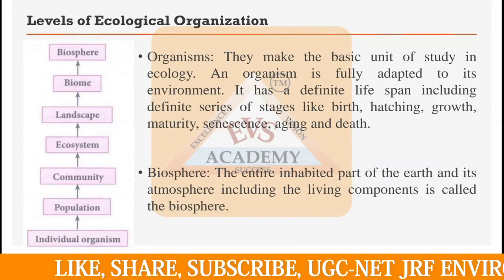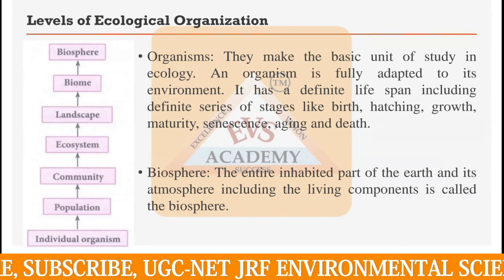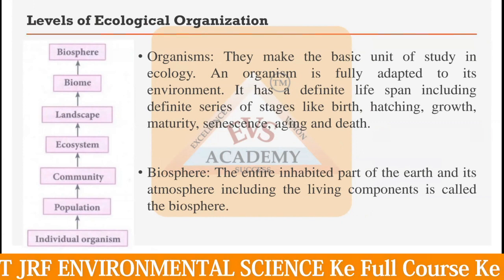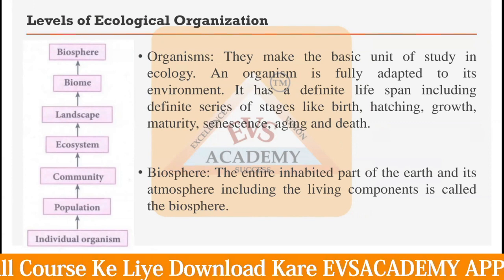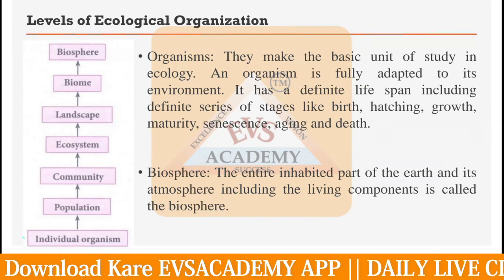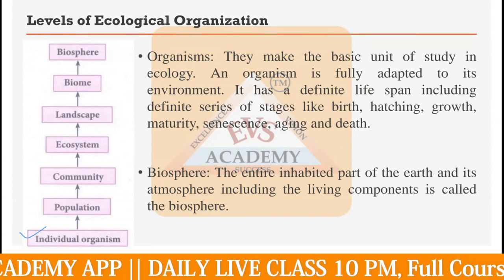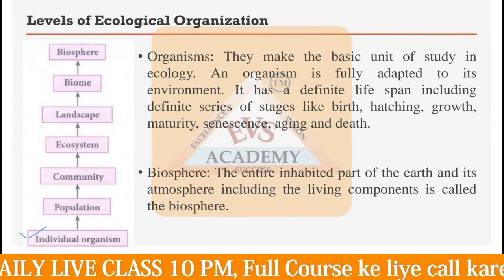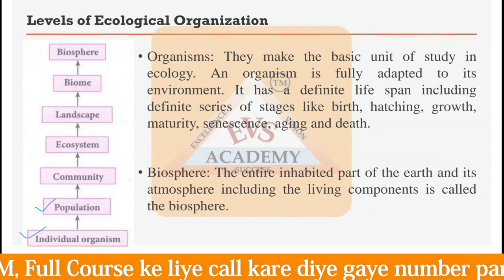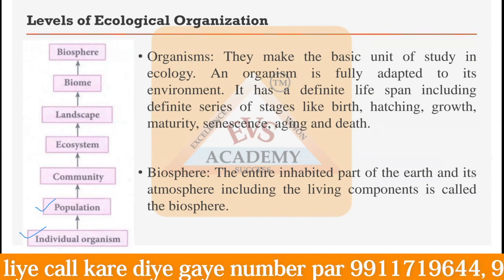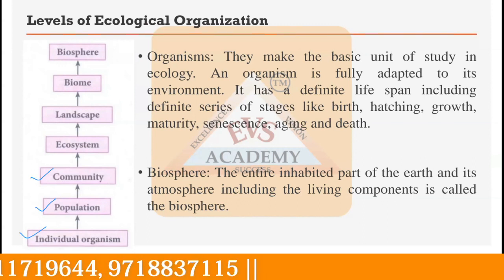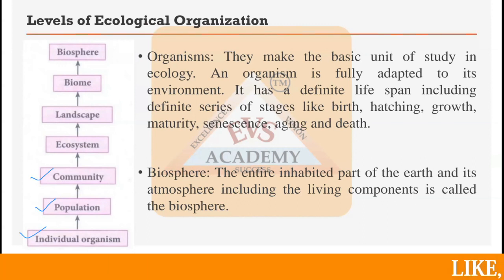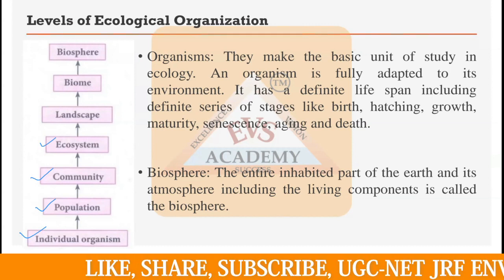The next basic concept is the levels of ecological organization. Individual organisms come together, and the same species of individuals make a population. Multiple populations of different organisms at a single place create a community. Multiple communities in a defined area create a whole ecosystem. Multiple ecosystems come together to form a landscape.